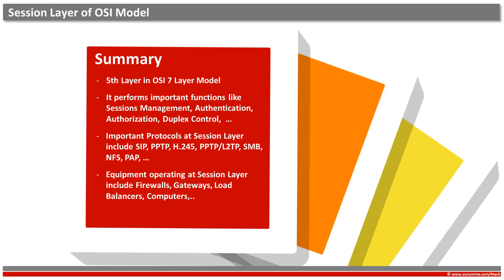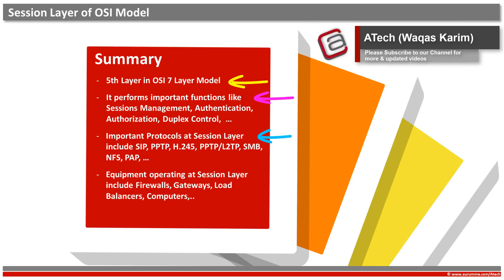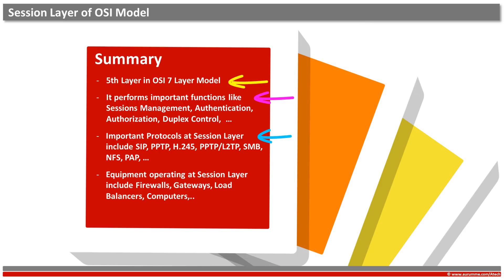To summarize the session layer: it is the fifth layer in the OSI 7-layer model. It performs important functions like session management, duplex control, authentication, authorization, and so on. Important protocols at the session layer include SIP, PPTP, L2TP, SMB, NFS, and password protocols. Equipment operating at the session layer includes end devices, firewalls, gateways, computers, servers, and mobile phones.